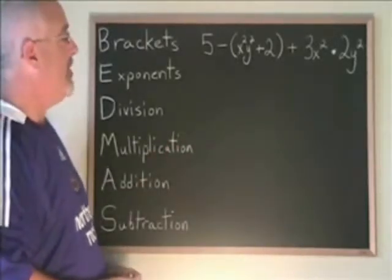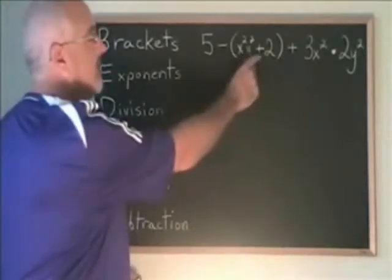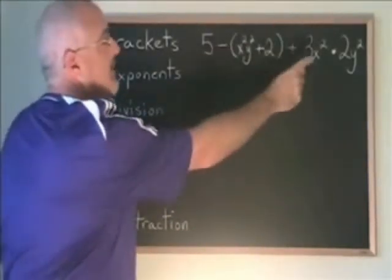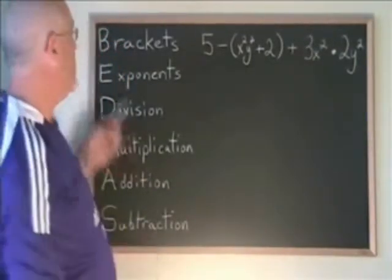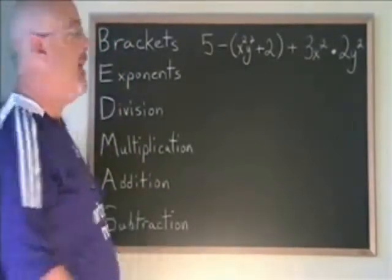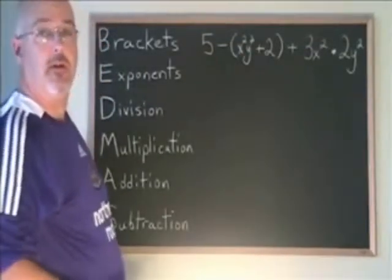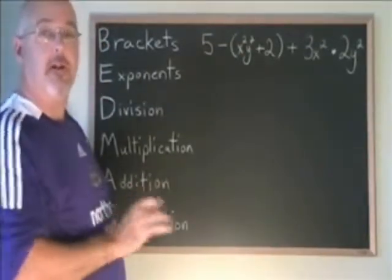In this example, I have a bracket with an addition inside of it, a subtraction, another addition, and a multiplication. BEDMAS tells me do the bracket first. I try to simplify inside of the bracket, but I find that there are no similar terms, so I cannot simplify inside the bracket.